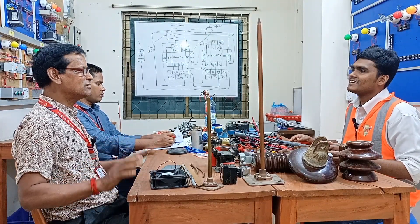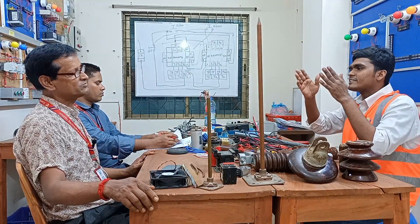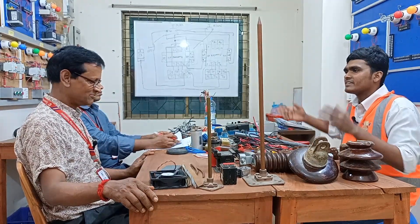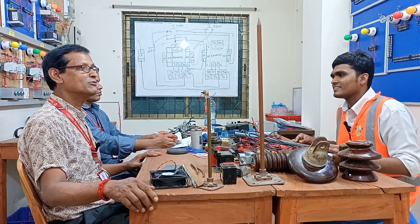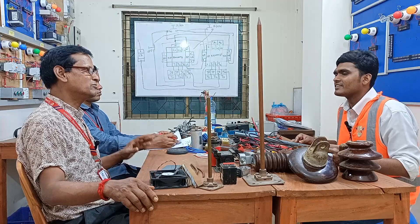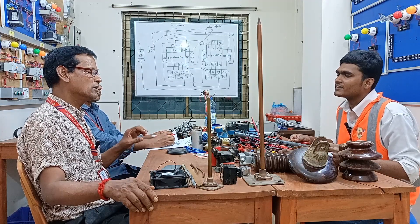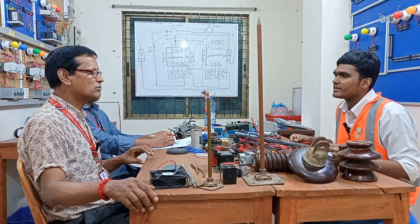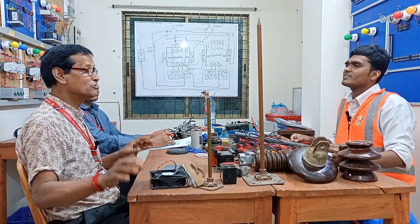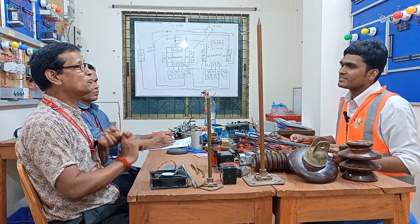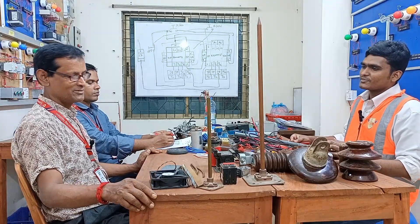It depends on the surface of the land — plain land or island. This will affect the span size. The span may be low or high, different in length. It may cross a river, a big river, a railway, or a big mountain. So this differs based on the territory of the land. Thank you sir.